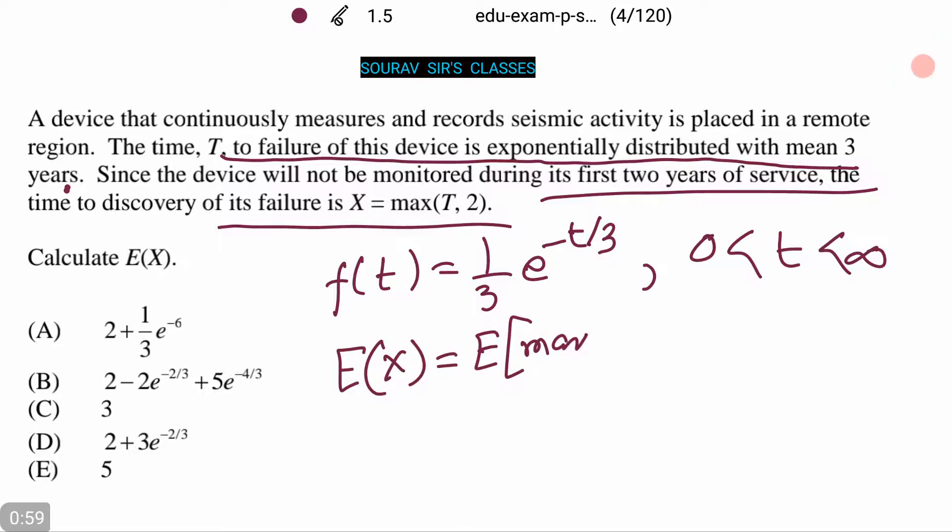This is equal to the integral from 0 to 2 of 2/3 e to the power minus t/3 dt.